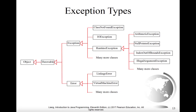Exception types are objects and they inherit ultimately from the root object. Underneath the root object we have the throwable object, which extends the root object. Error and exception objects in turn inherit from the throwable object. The error object is extended by the linkage error, virtual machine error, and many more classes that inherit from error.